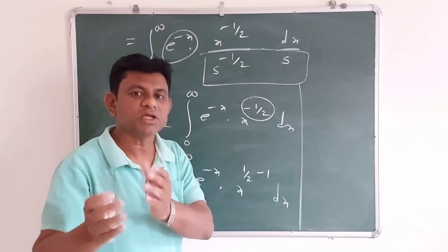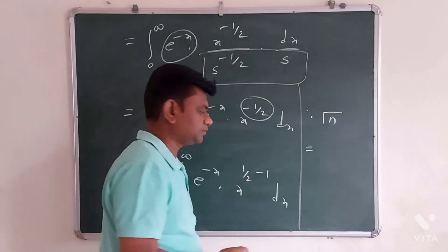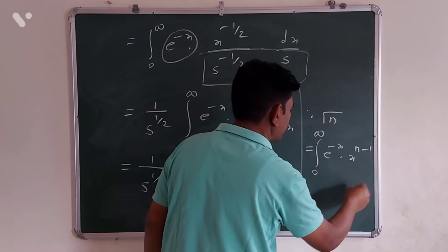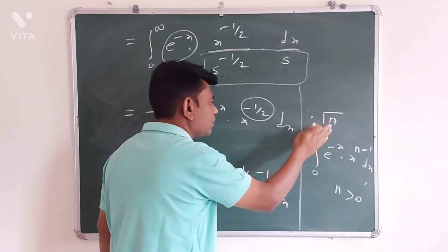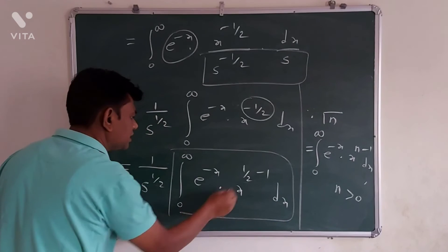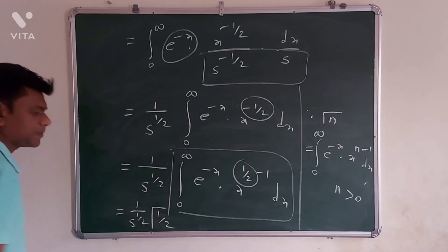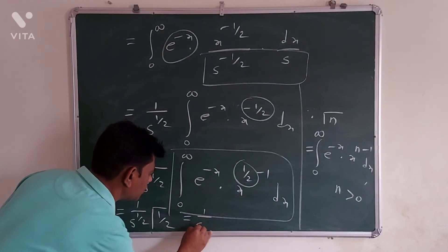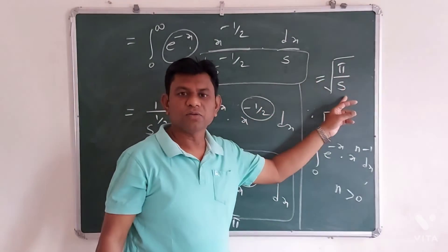Now we recall the definition of the gamma function: gamma(n) equals the integration from 0 to infinity of e to the power minus x times x to the power n minus 1 dx, where n is greater than 0. By using this definition, our integral is gamma of 1 by 2. Therefore, the answer is 1 upon s to the power half times gamma(1/2). Since gamma(1/2) equals root pi, the answer is root pi over root s.